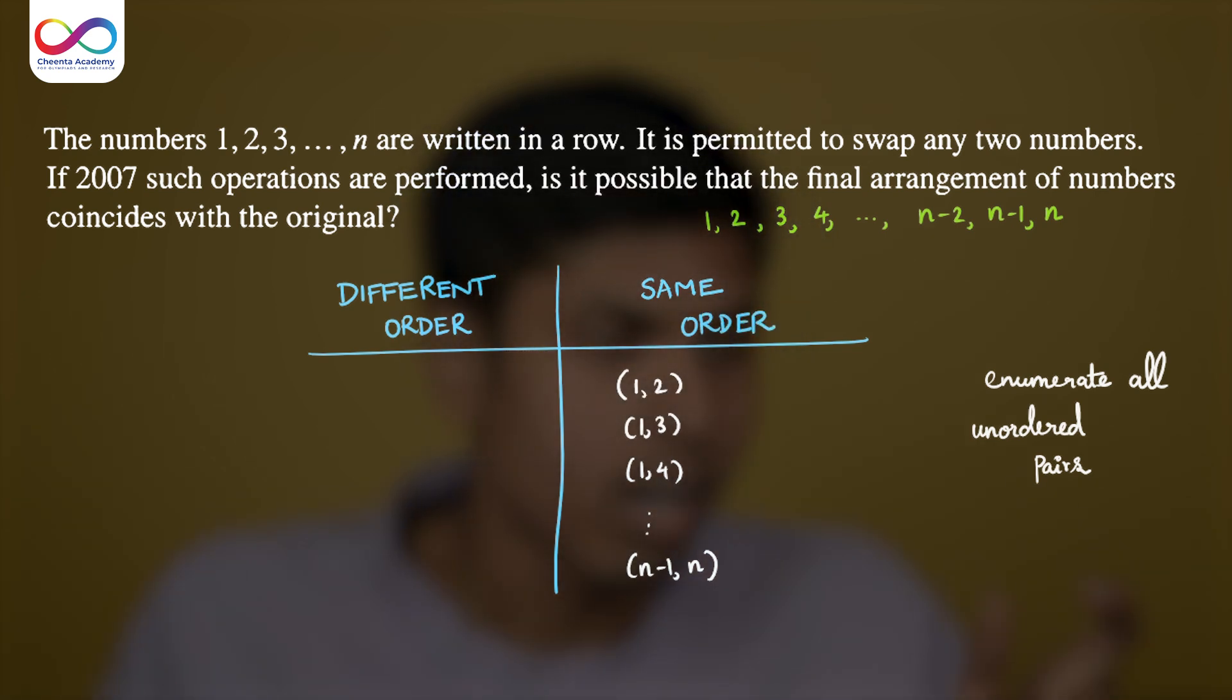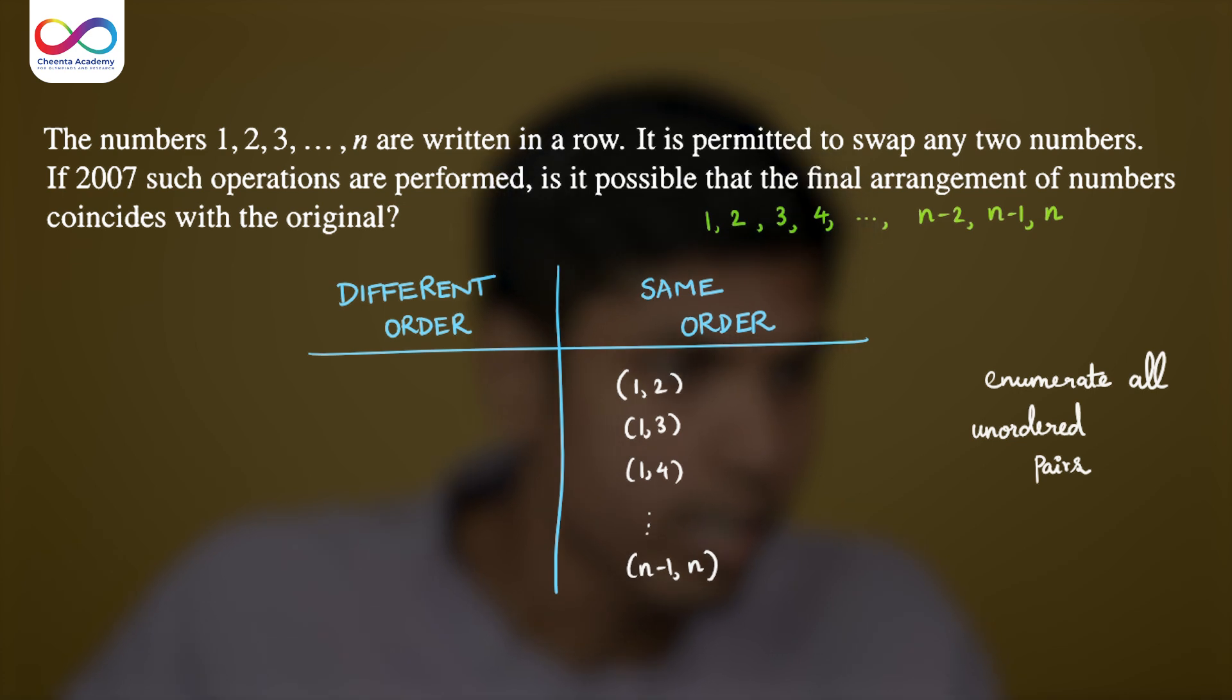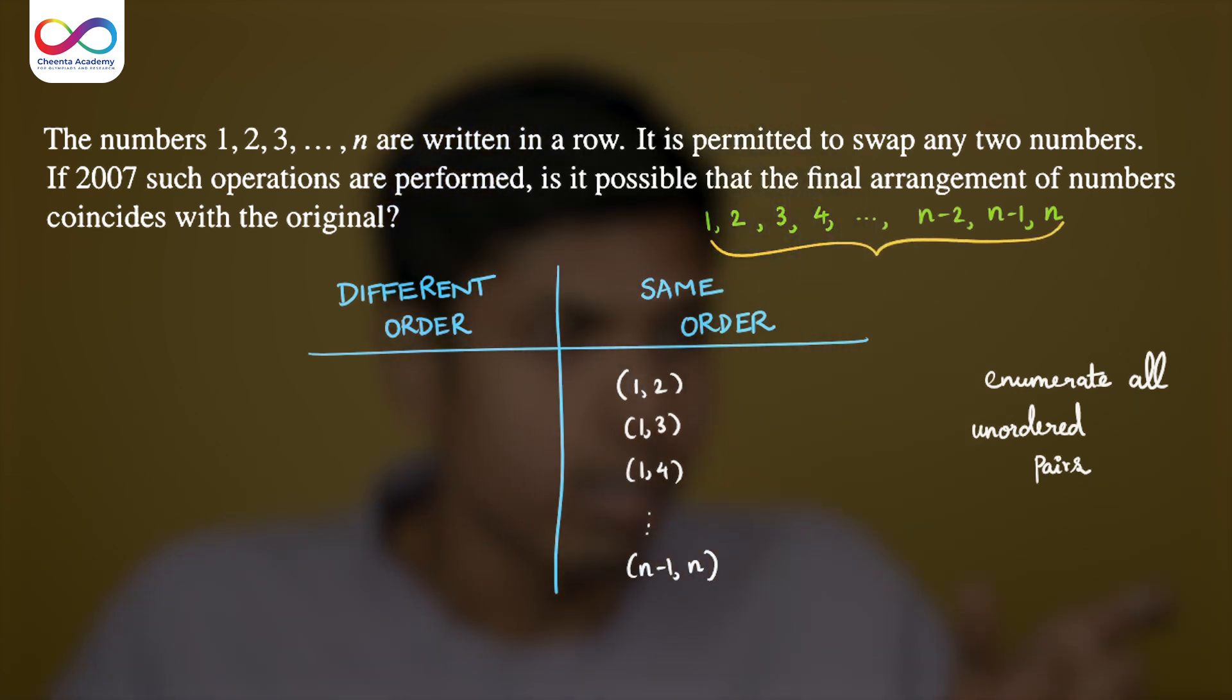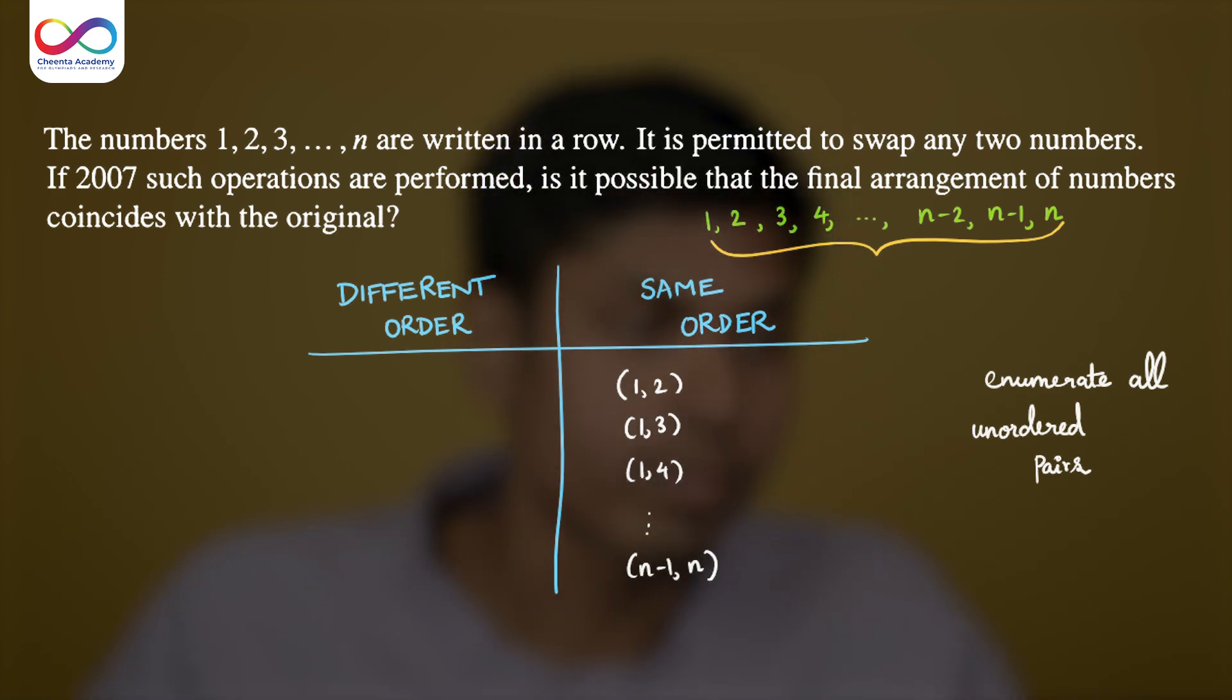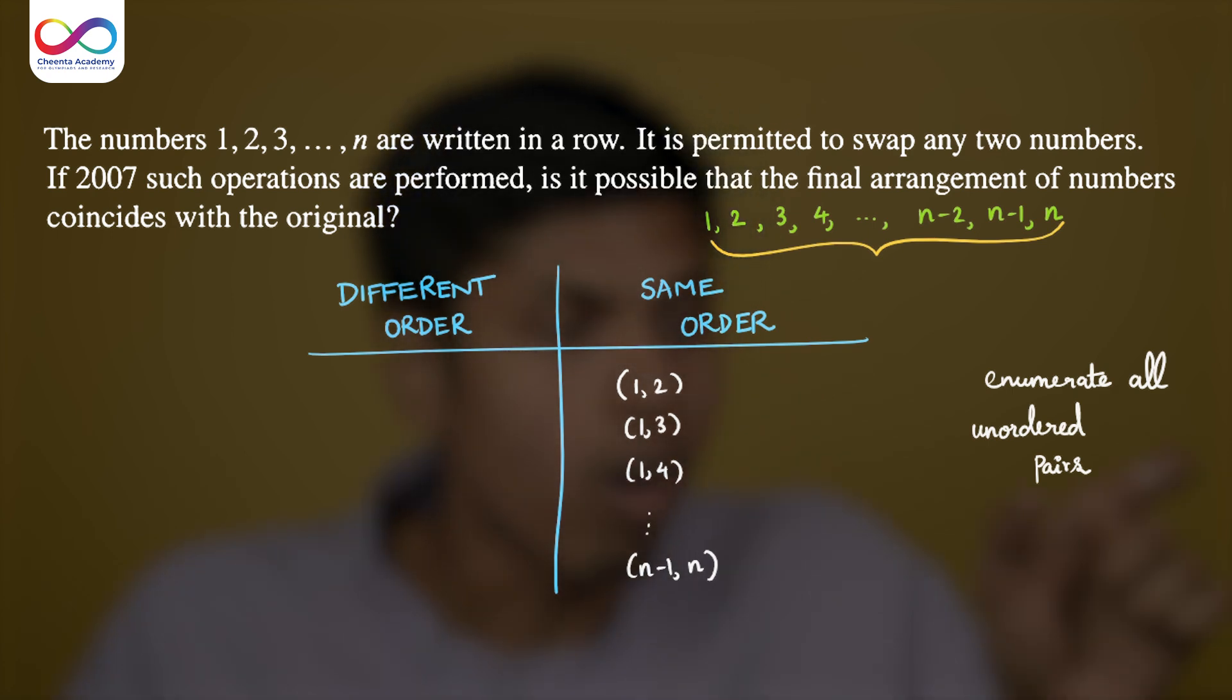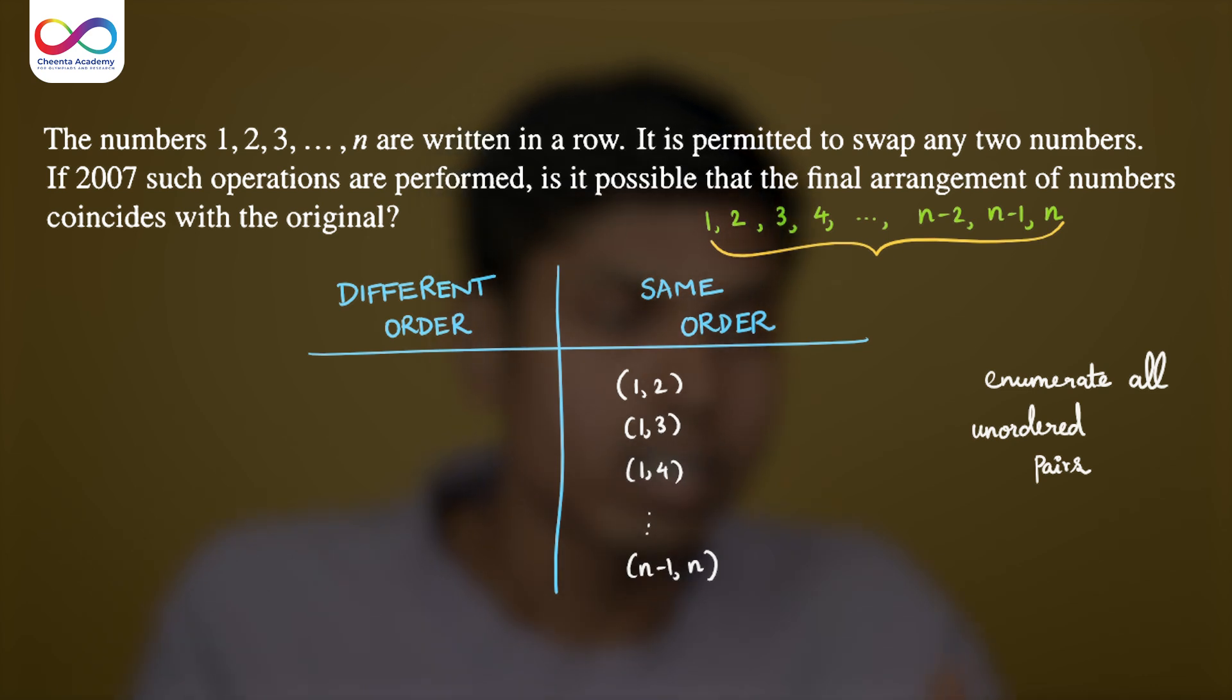If you have a pair, say 1, 2, if the numbers in the sequence under consideration, that is this sequence, if they are in that same order, then we place it in the second column, that is same order. If 1 and 2 are in different order, that is 2 occurs before 1, then we place it in the first column, the column named different order. This makes sense because all the pairs are such that the left number is less than the right number, which is also the condition on the sequence under consideration initially. So we are good to go now.